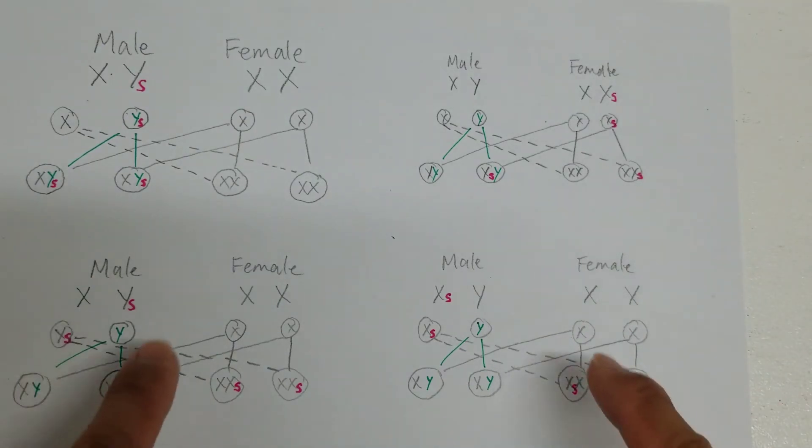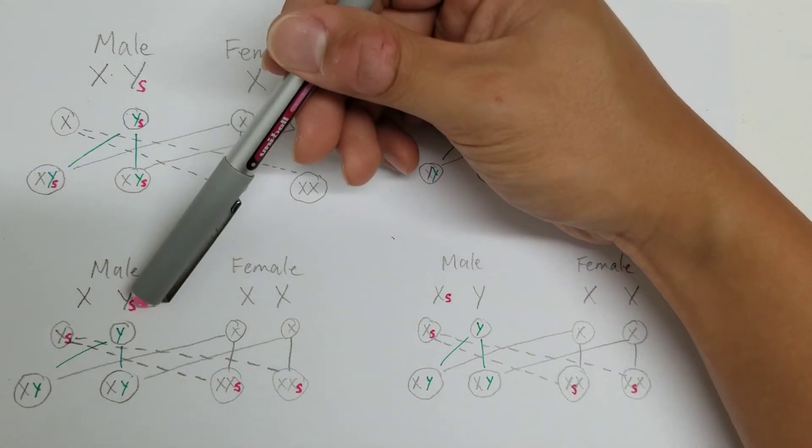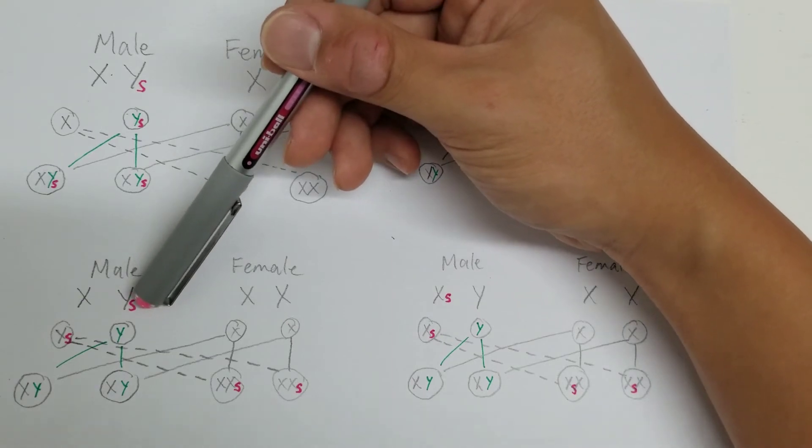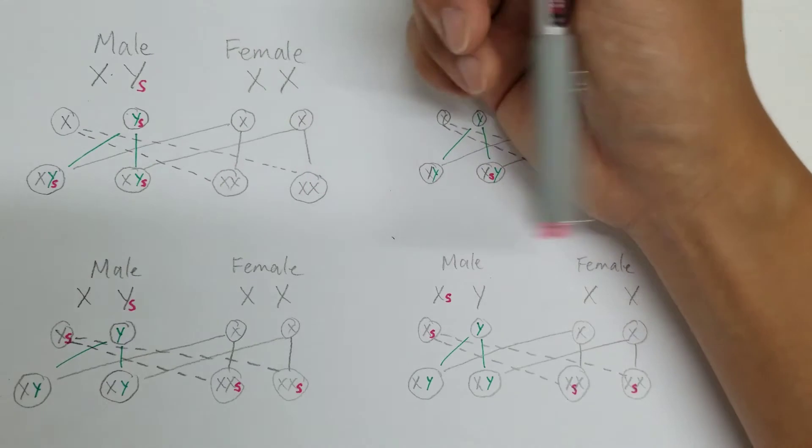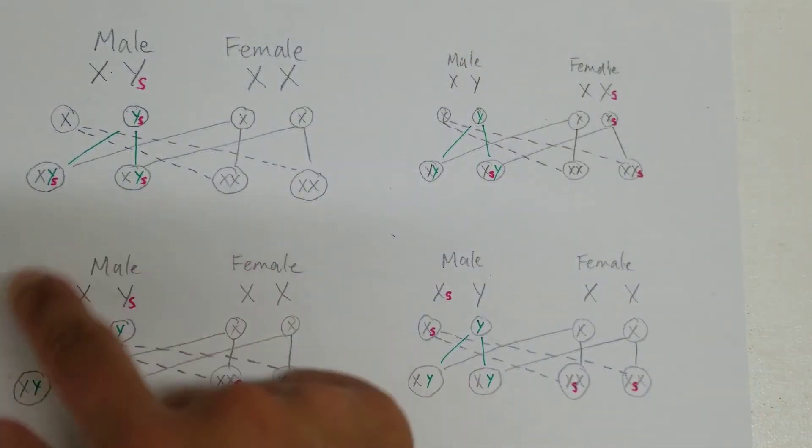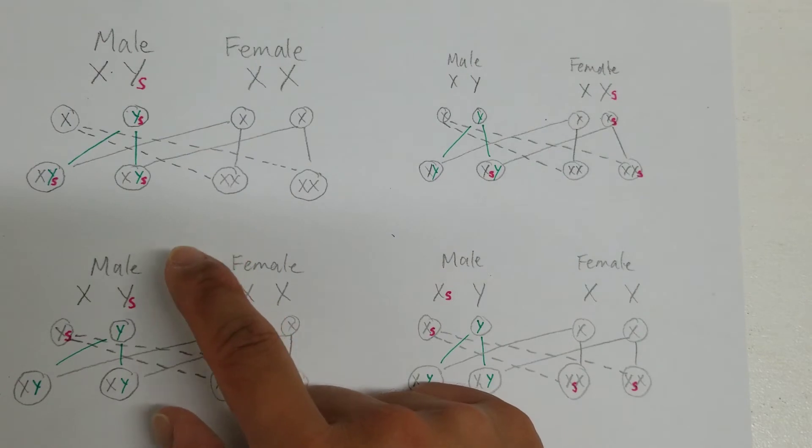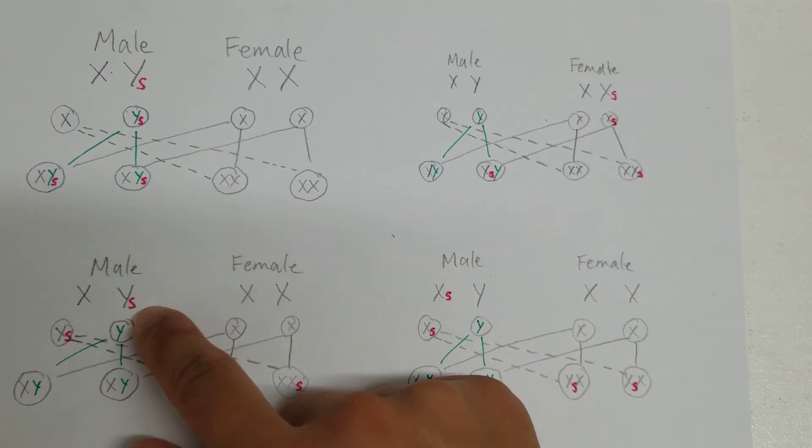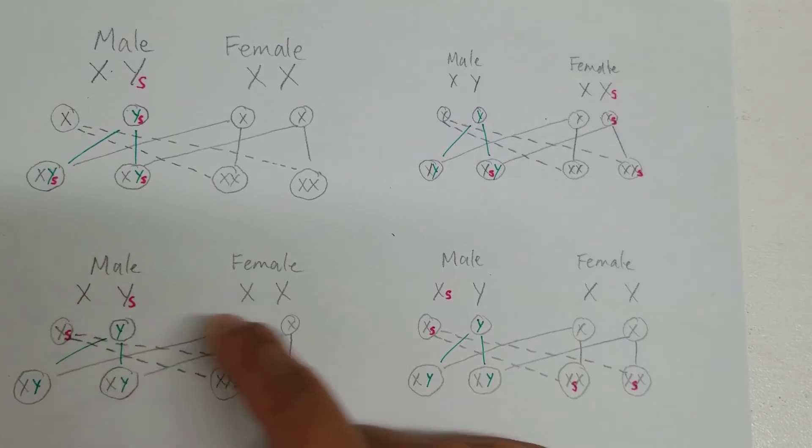Now you're probably looking at this and saying these two scenarios look very similar and they are. The only difference is that the sex link gene started on the Y chromosome and crossed over to the X chromosome and that only happened once. So again, this is the anomaly, right? This doesn't happen often. In fact, it's very, very rare for a sex link gene to cross over to the other chromosome.